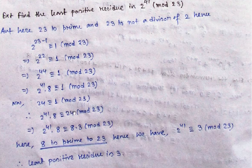So from here we have derived that 2 to the power 41 times 8 is congruent to 24 (mod 23). Now 24 can be written as 8 into 3. The number 8 appears on both the left-hand side and right-hand side, and 8 and 23 are prime to each other — that is, gcd(8, 23) = 1. So if a term is prime to the modulus M, we can cancel it from both sides of the congruence.